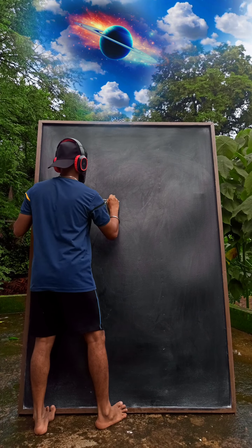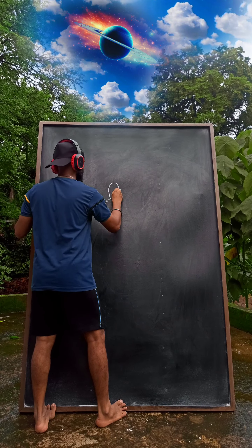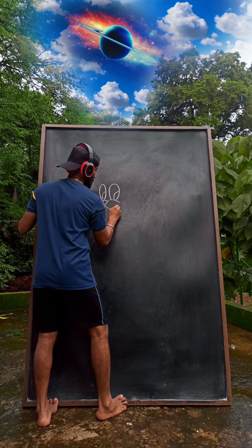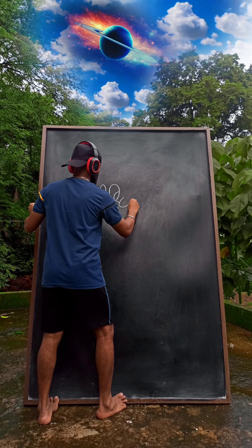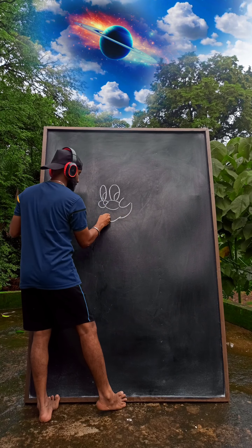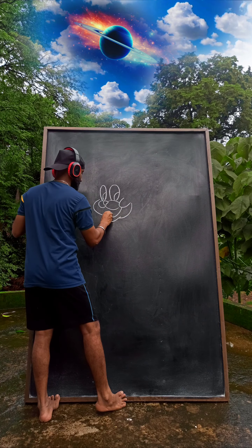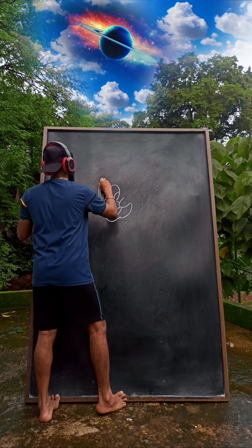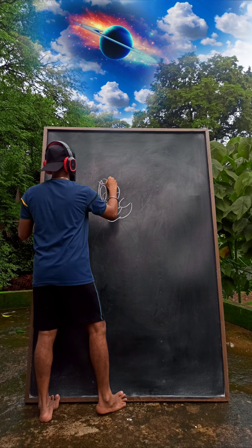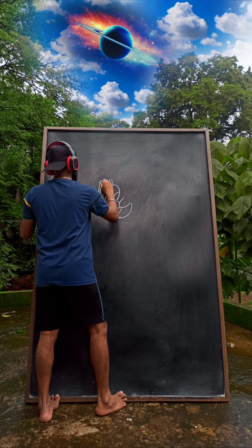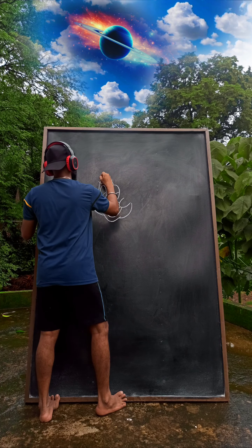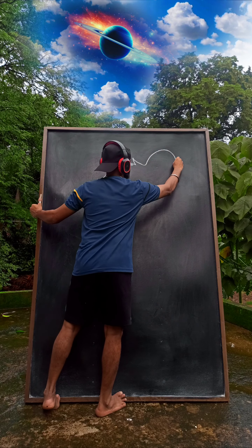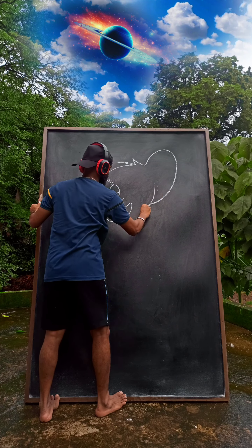Hi guys, welcome back to my YouTube channel. In this video I will show you how to draw Jerry. Jerry Mouse is a fictional character and one of the two titular characters in Metro Goldwyn-Mayer's series of Tom and Jerry. Hope you guys enjoy this video and subscribe to my channel for upcoming videos. Let's enjoy!